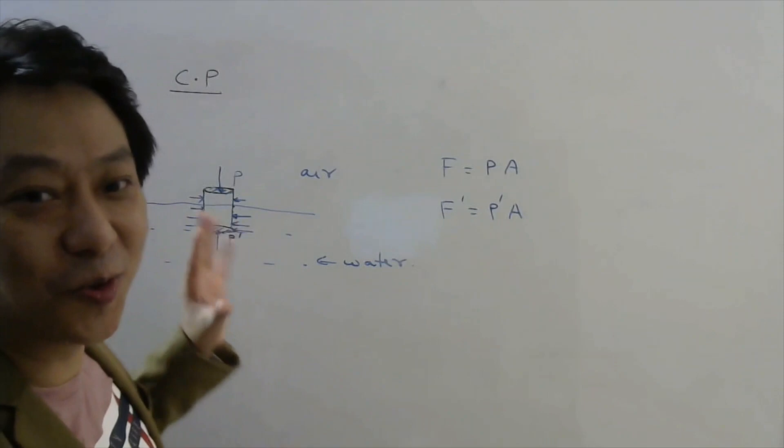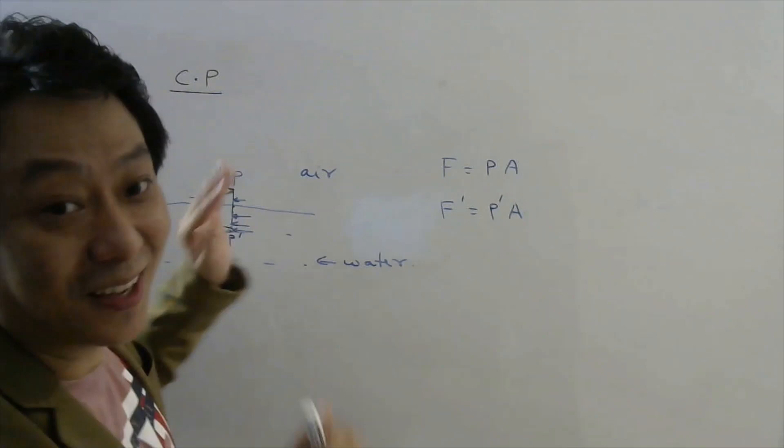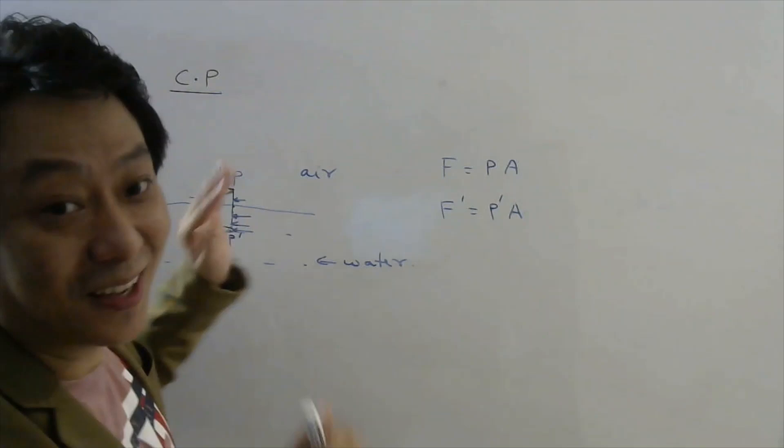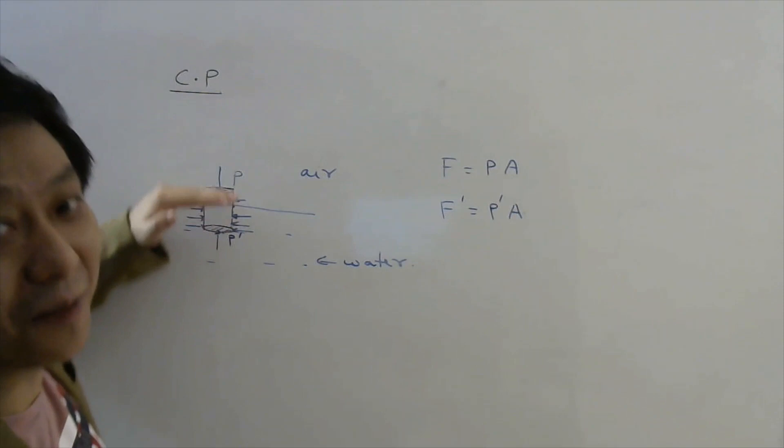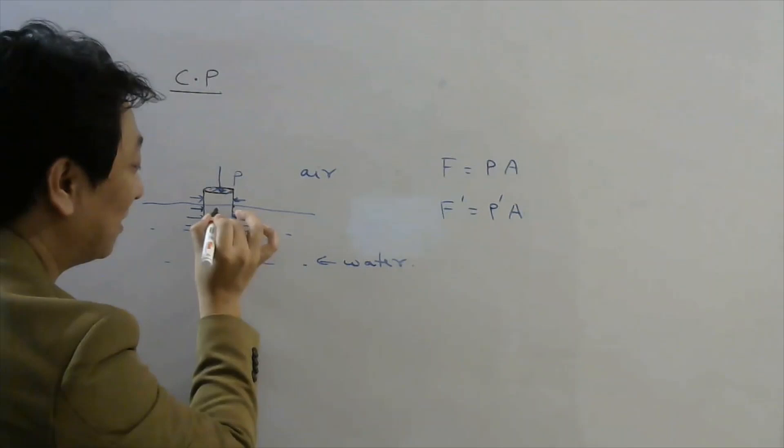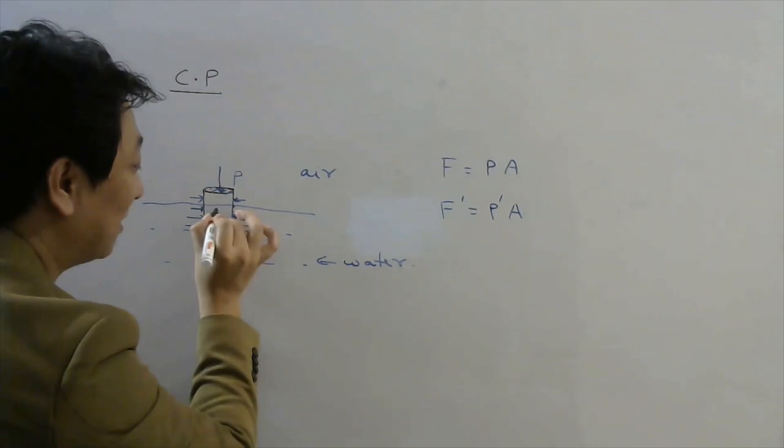The pressure due to water will be more than the pressure due to air, because water is denser. So if a body is partially submerged, you will feel more pressure from the water side. Therefore the center of pressure is expected to be more towards the water side — somewhere lower down — whereas the center of mass of a uniform body would be at its geometric center. So the center of mass and center of pressure are at different locations.